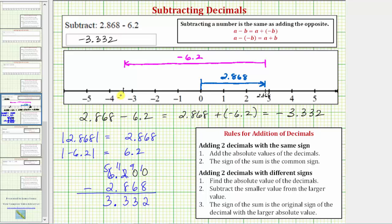Which brings us to negative 3.332 which would be just to the right of negative 3.5. So positive 2.868 plus negative 6.2 or positive 2.868 minus positive 6.2 equals negative 3.332.